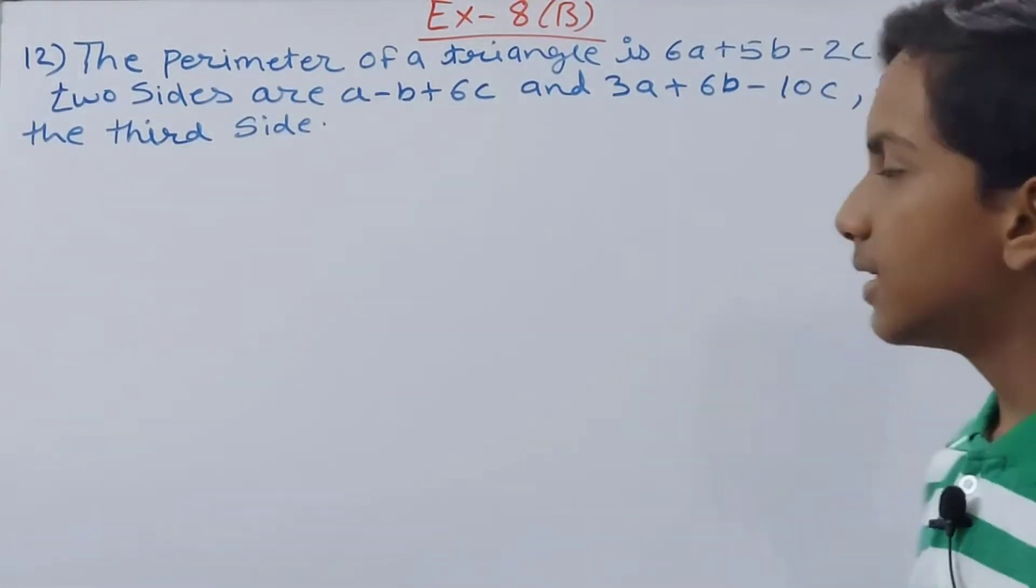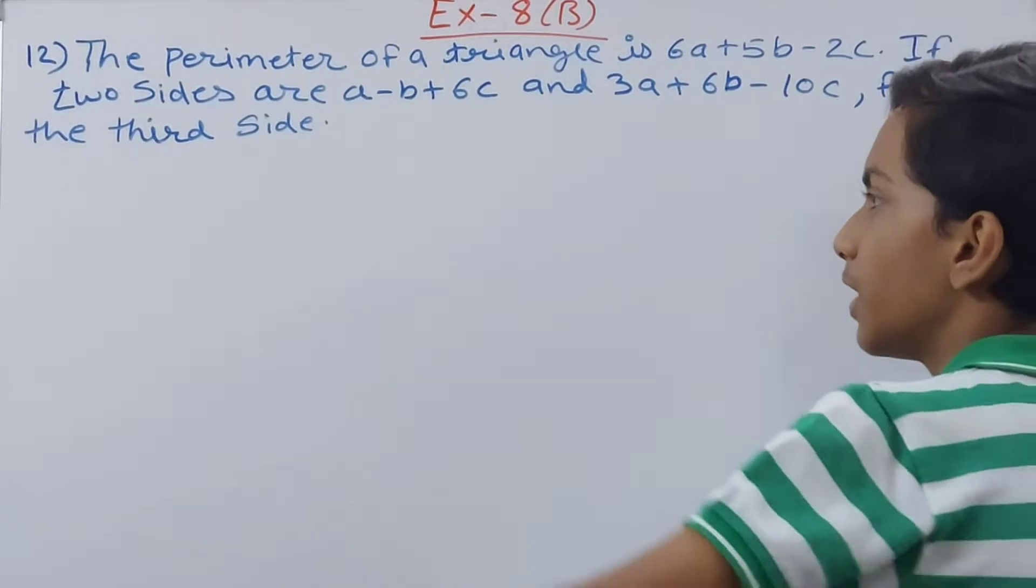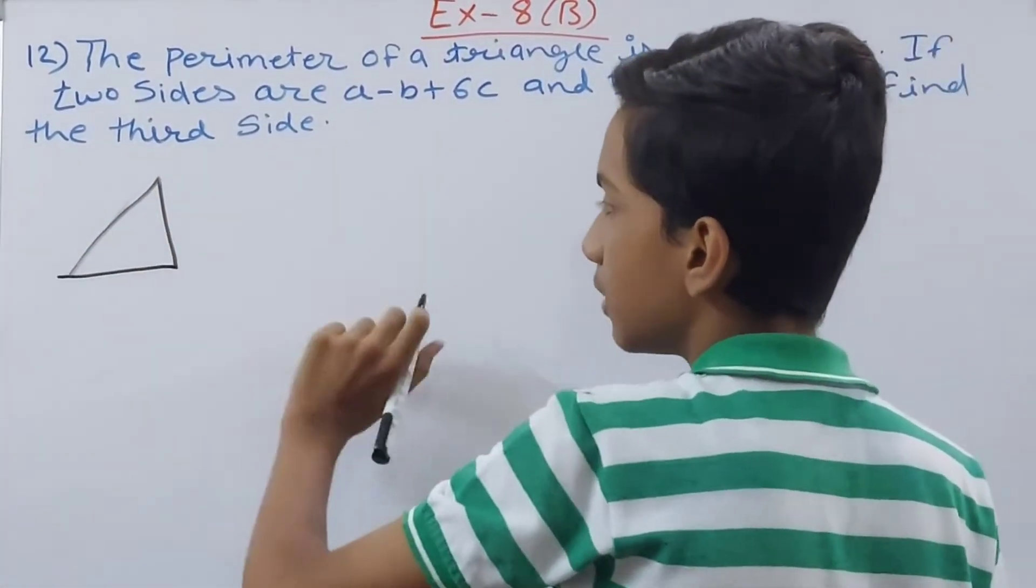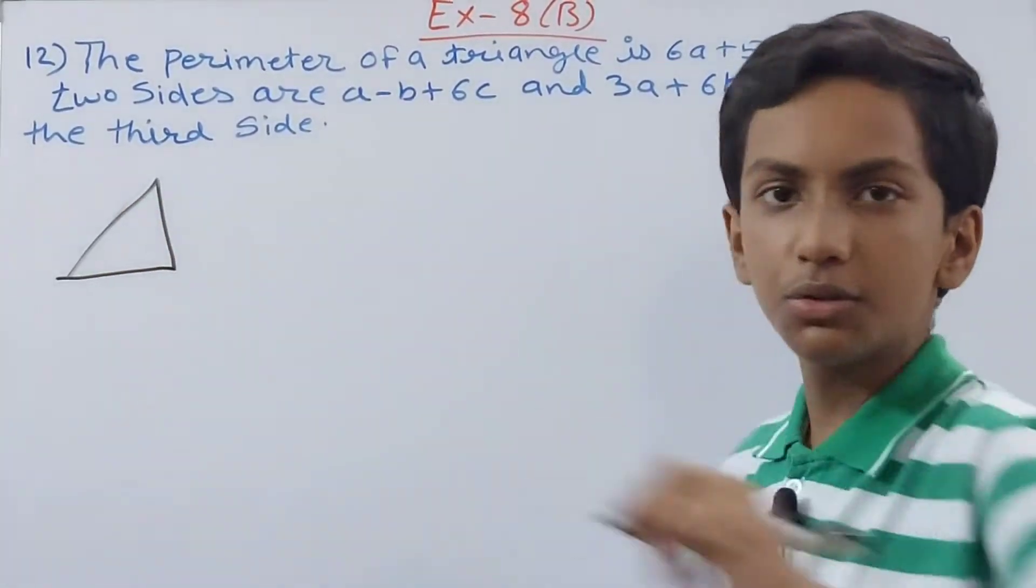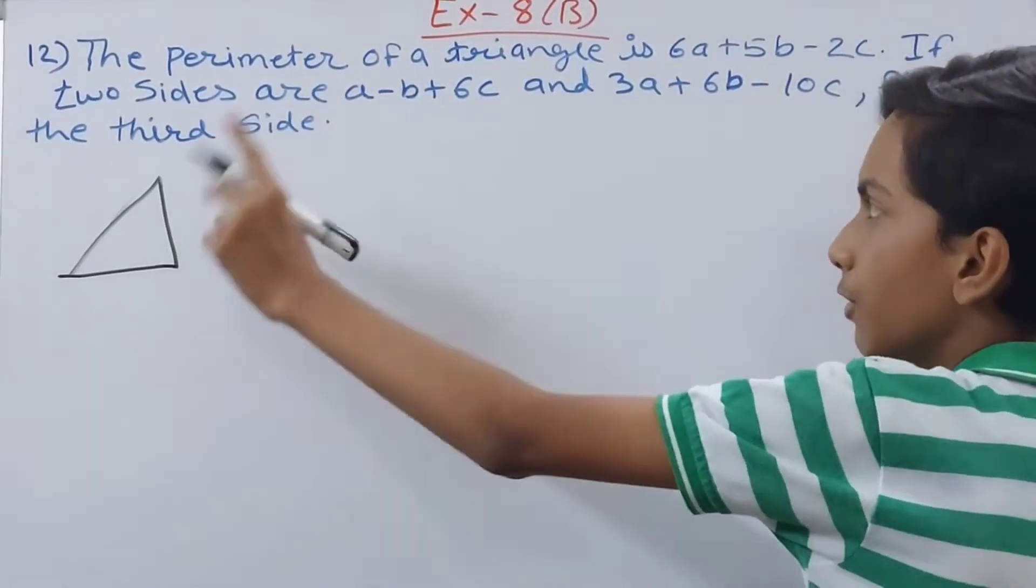So what is a perimeter? Suppose I make the triangle here itself. So this is my triangle. Its perimeter is the sum of the length of all three sides. One side is given, and the other one is also given, but the third one is not given.